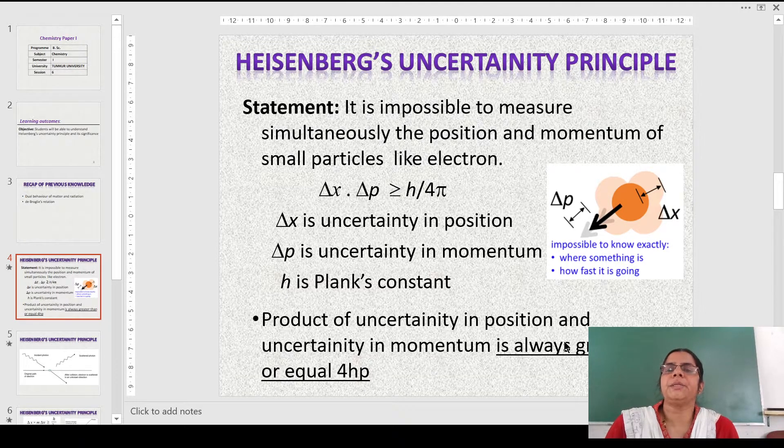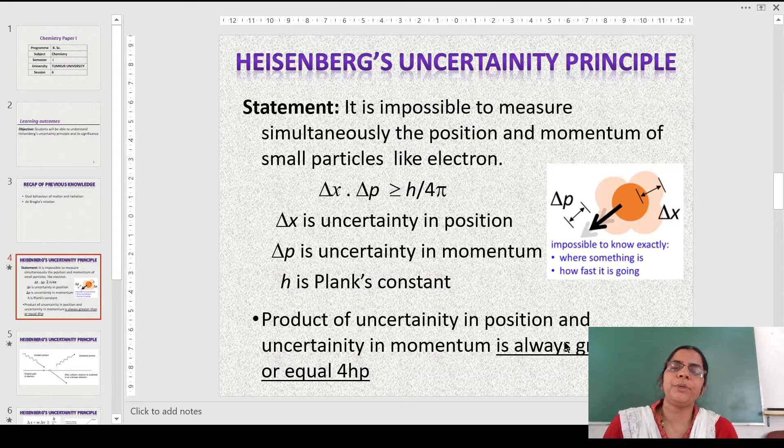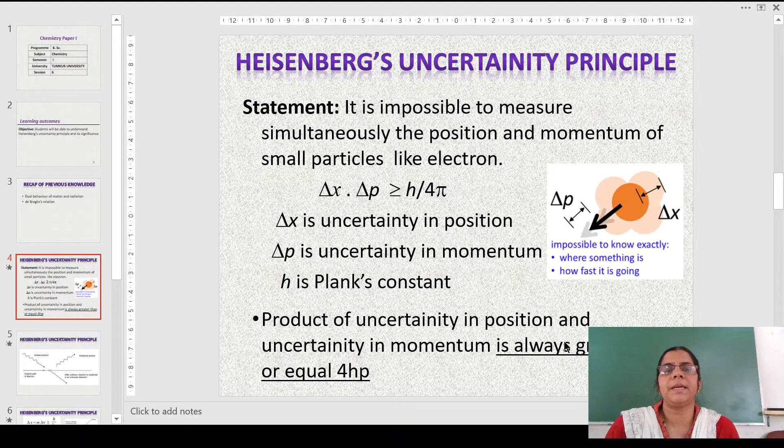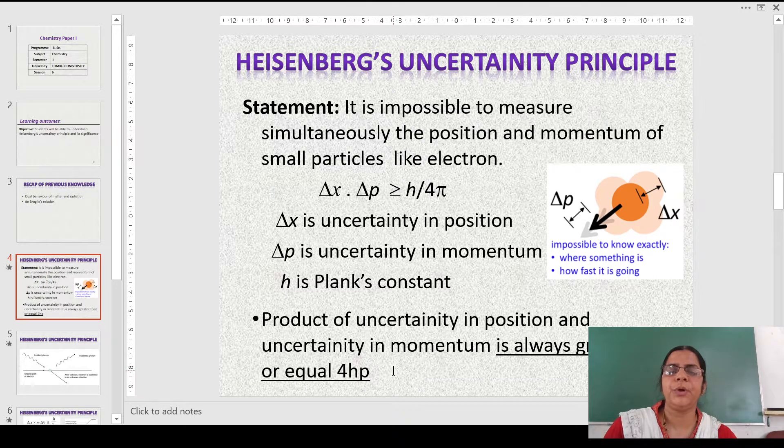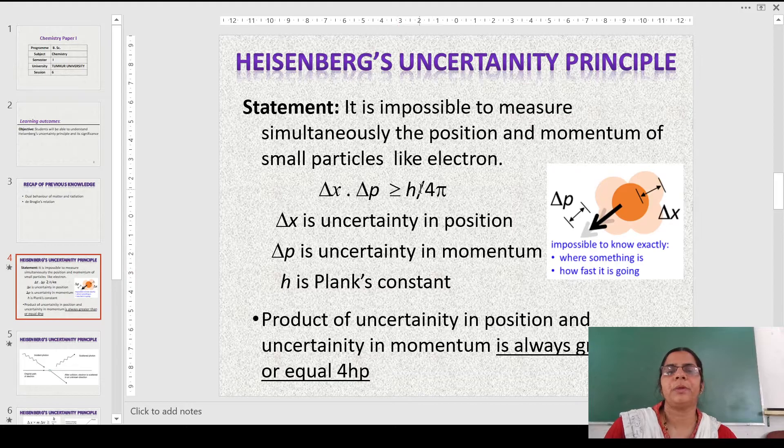According to this, we can state that it is impossible to measure simultaneously both the position and momentum of small particles like electron. If Δx is the uncertainty in position and Δp is the uncertainty in momentum, he gave the relationship that Δx × Δp, that is, the product of uncertainty in position and the uncertainty in momentum, is always greater than or equal to h/4π.